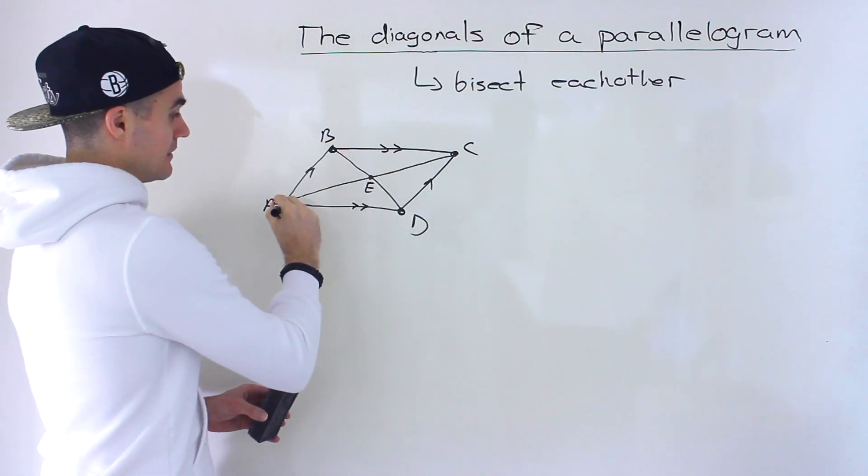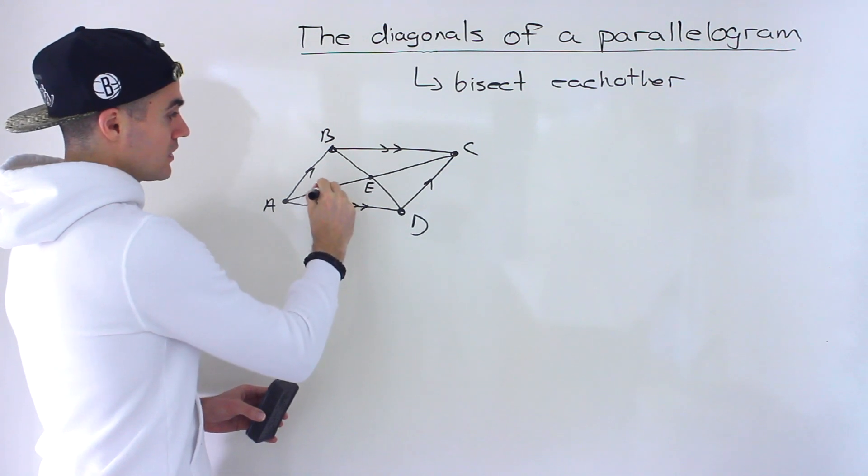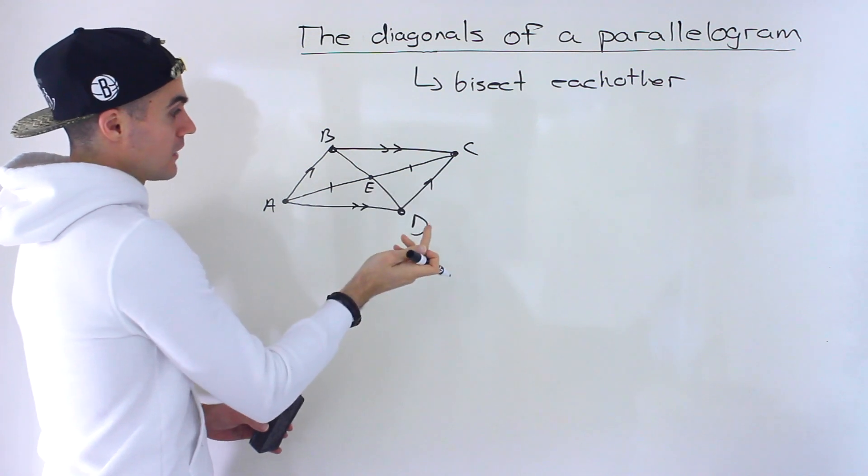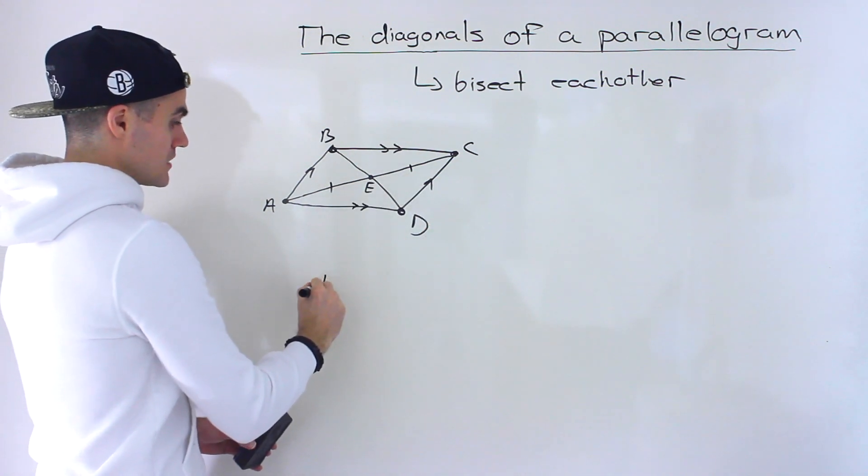So it means that the length AE over here is equal to the length of EC, or CE if we go in alphabetical order. Let's keep track of these.